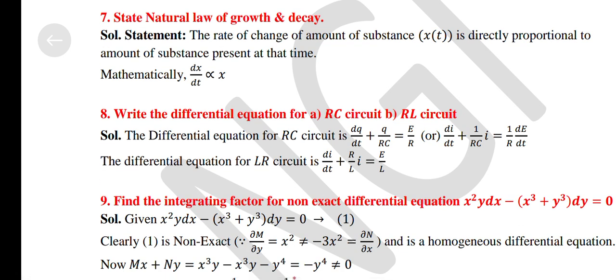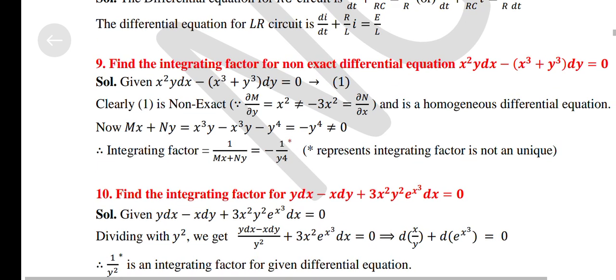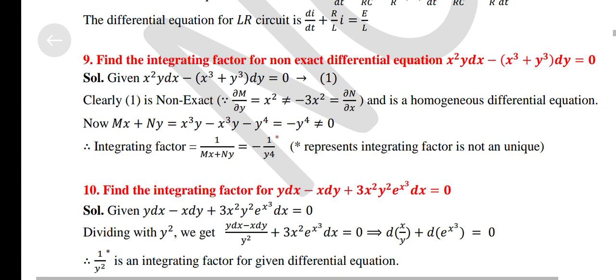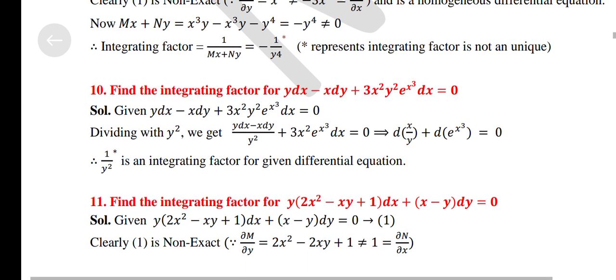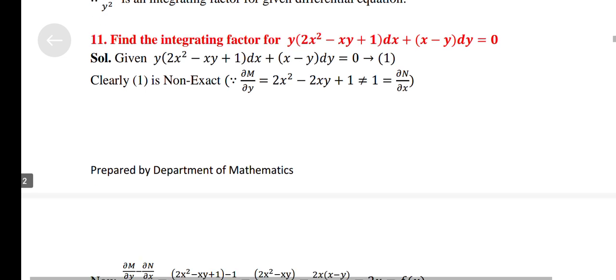Find the integrating factor for the non-exact differential equation: x² y dx − (x³ + y³) dy = 0. Find the integrating factor for: y dx − x dy + 3x² y² e^(x³) dx = 0.